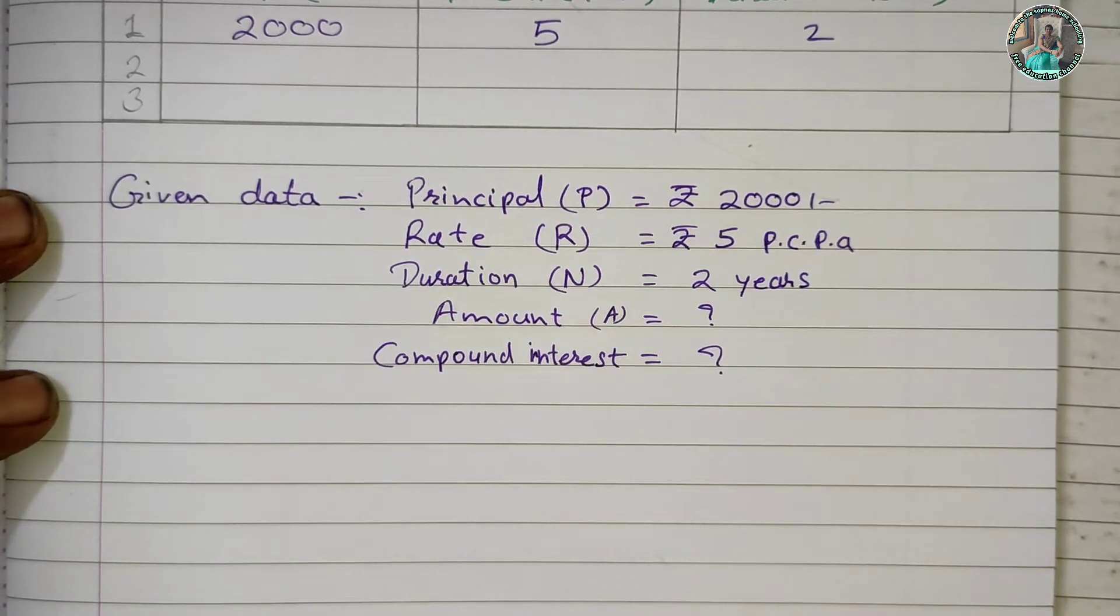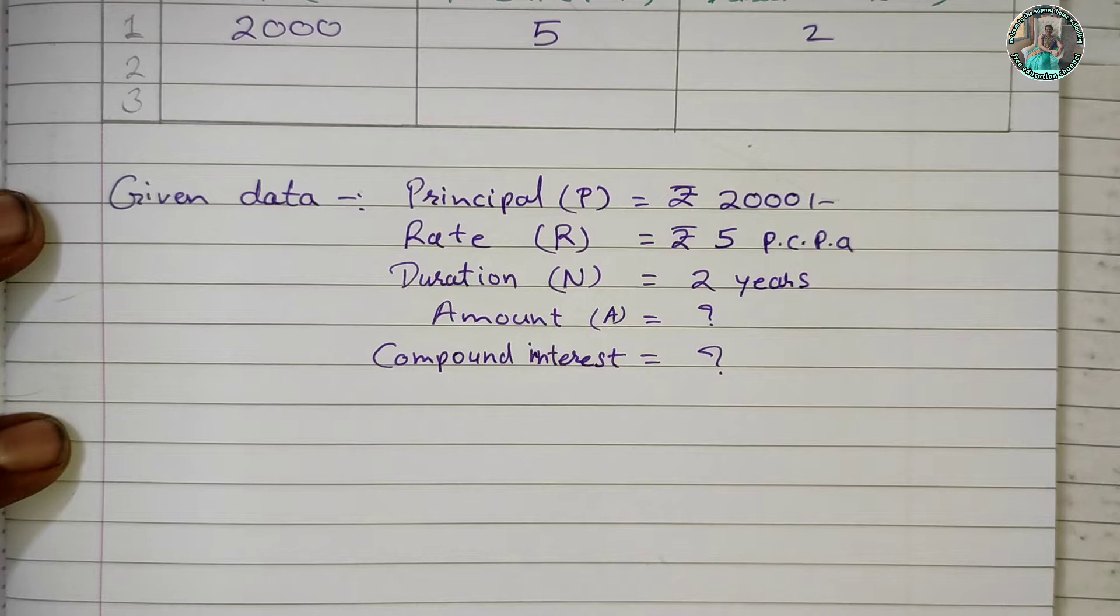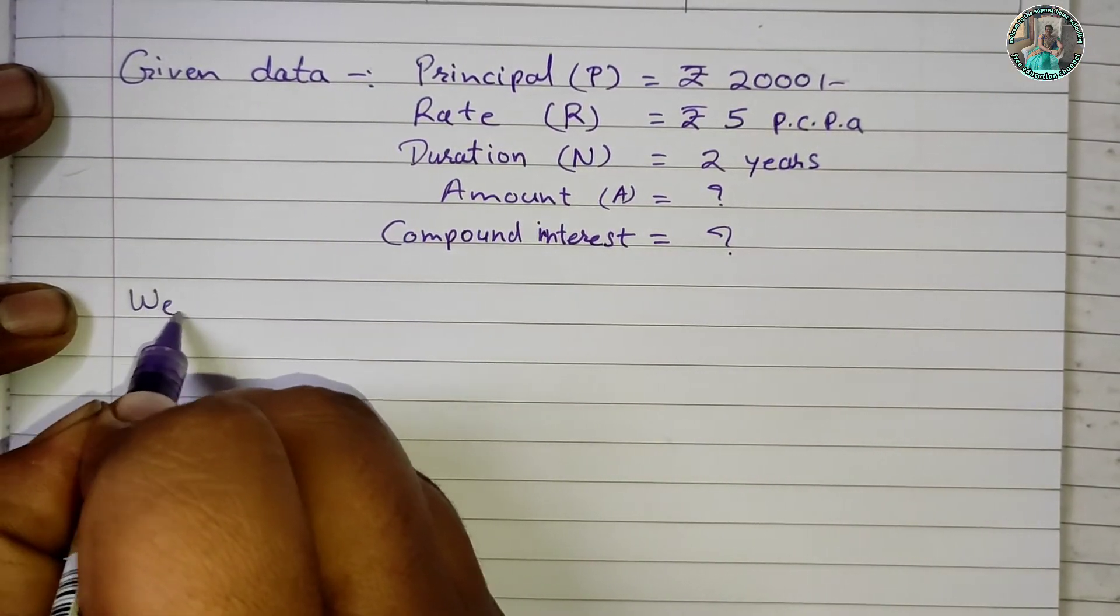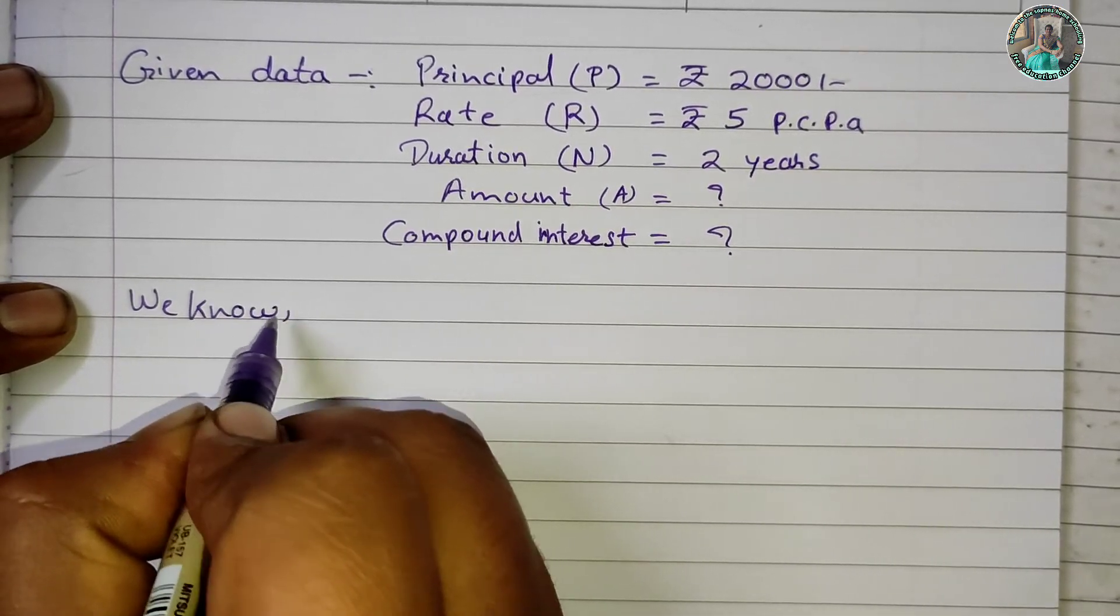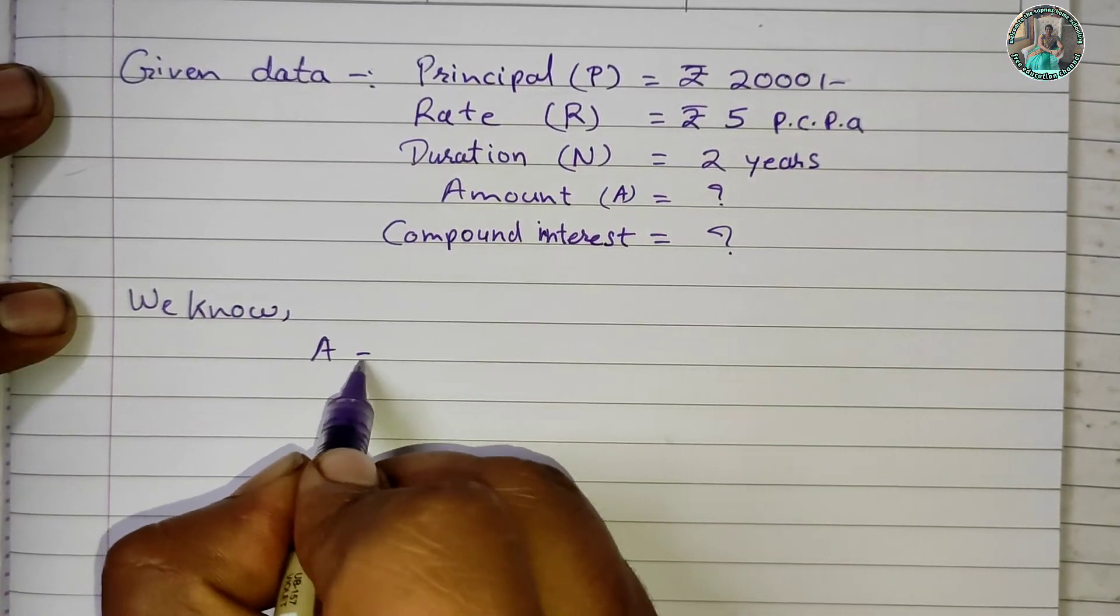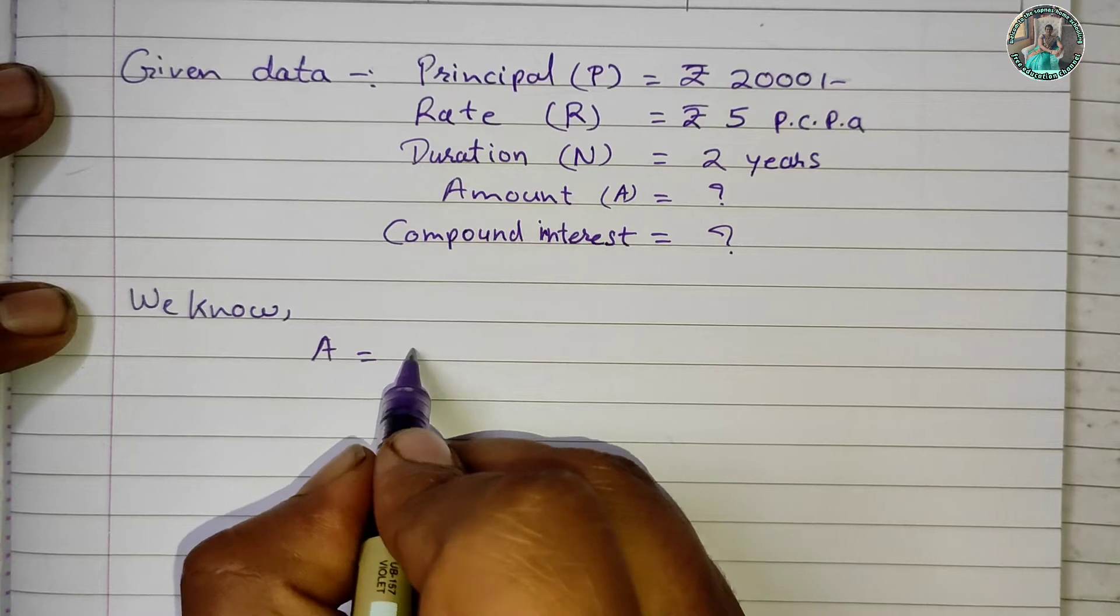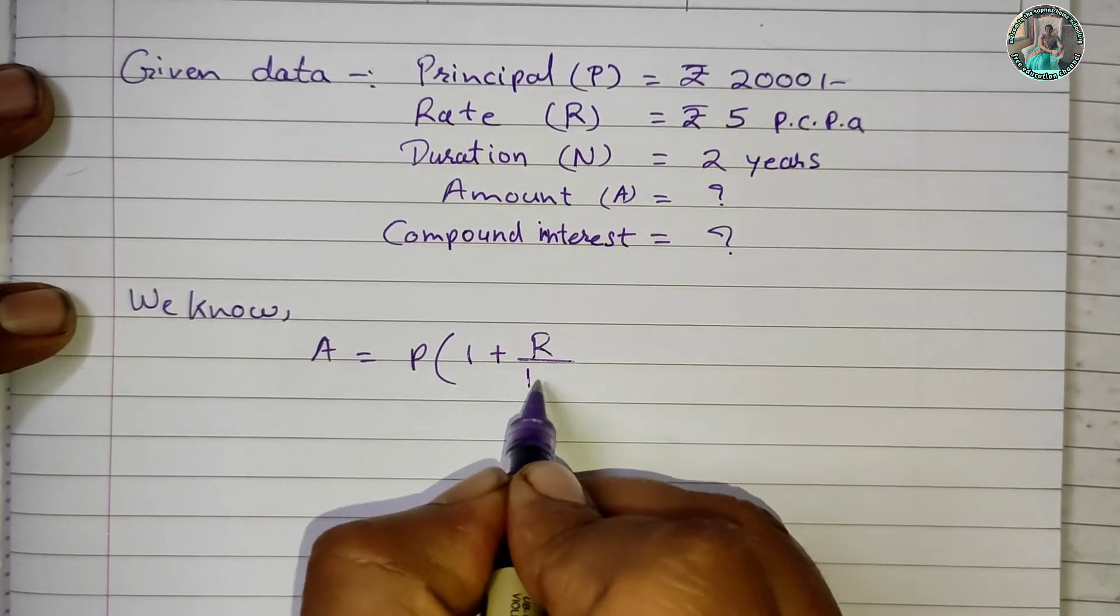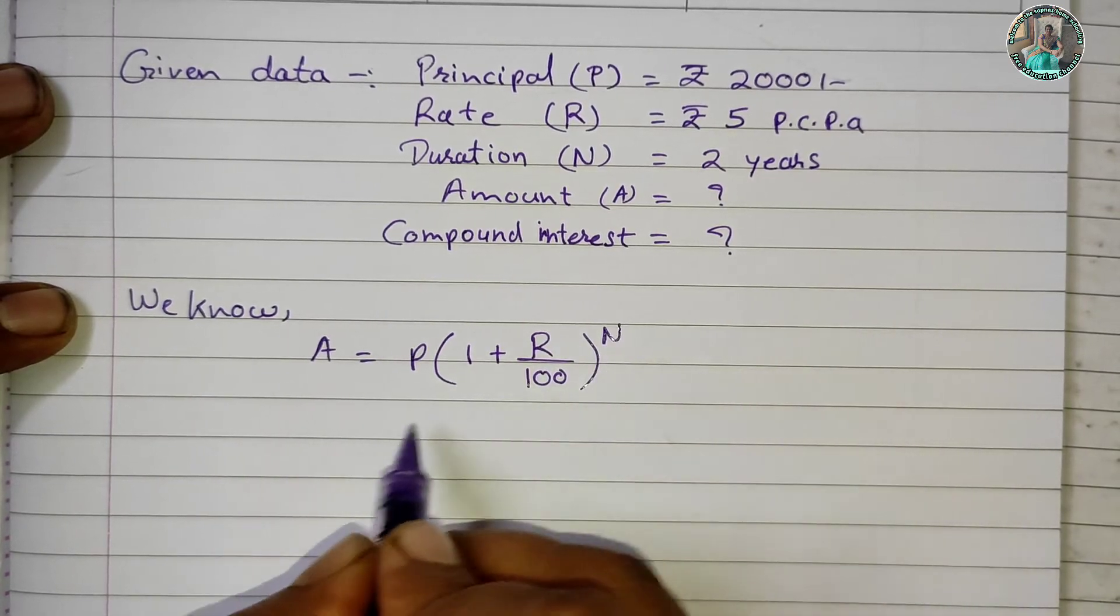If you know the principal amount formula, then you will solve the question easily. The formula is: Amount is equal to P times (1 plus R upon 100) raised to N.